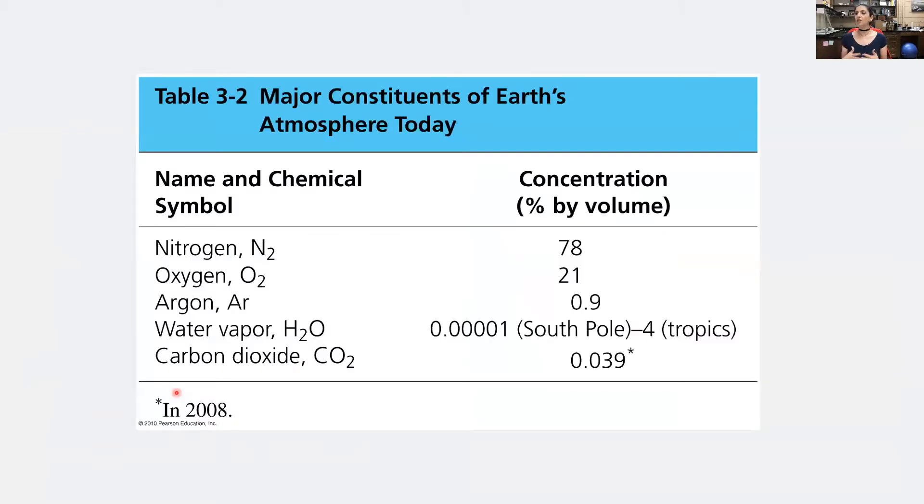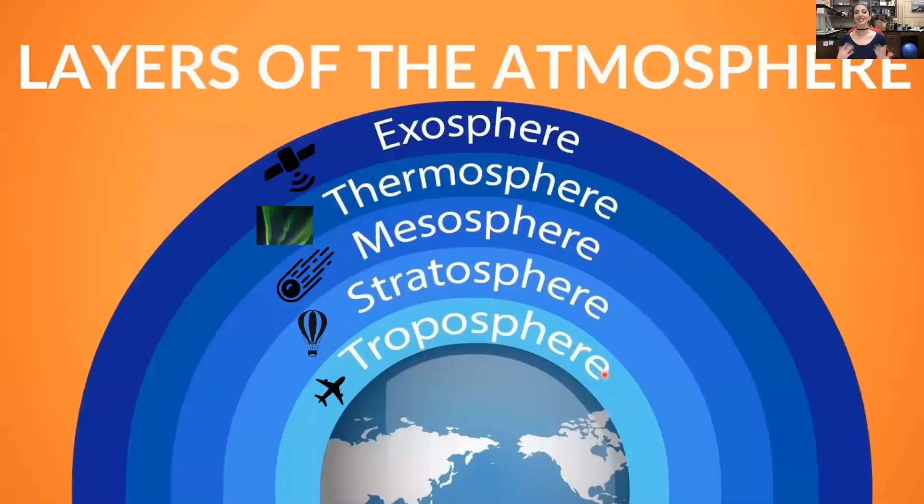Here's a table showing the major constituents of Earth's atmosphere today. It's very important to recognize that the composition of our atmosphere wasn't always what it is today. But today, we have diatomic nitrogen taking up 78% concentration by volume in our air, 21% is oxygen, about 1% is argon. Water vapor ranges from really small at the South Pole to quite large at the tropics. And CO2 in 2008 was 0.039%, but as we'll talk about in the coming slides, this is actually extremely out of date.